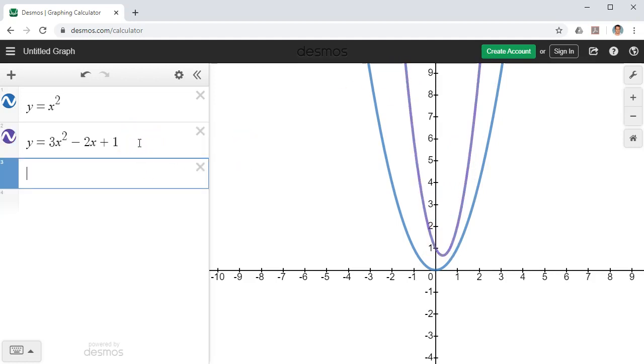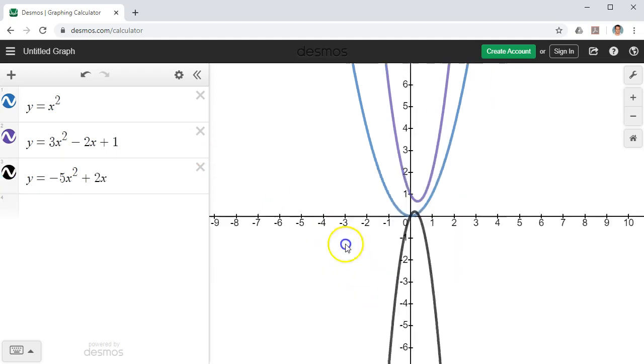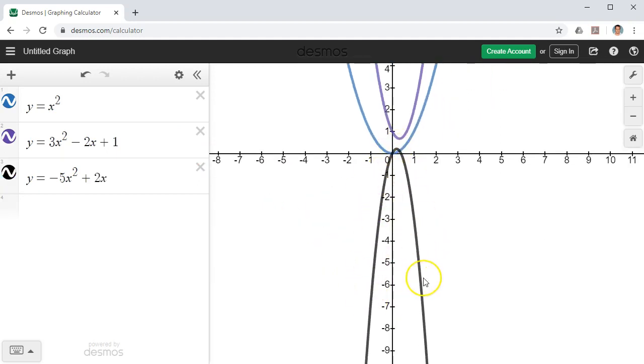Our next quadratic function was y equals negative 5x squared, or x to the power of 2, plus 2x. And once again, we get this U or V shape graph, except this time it's upside down.